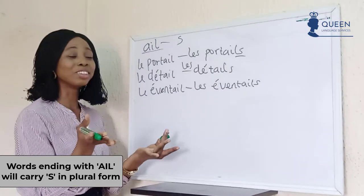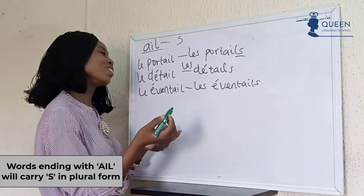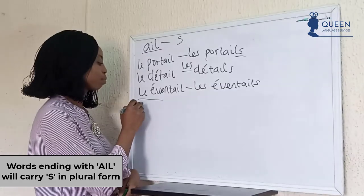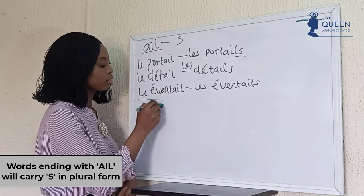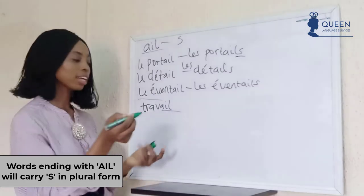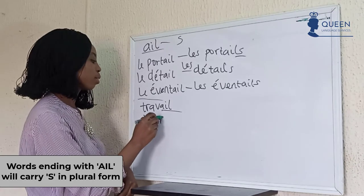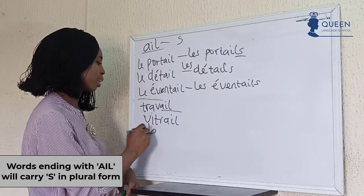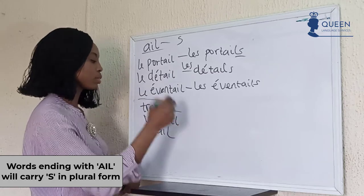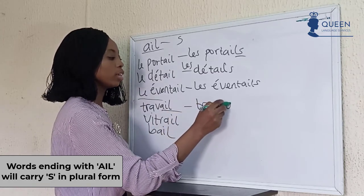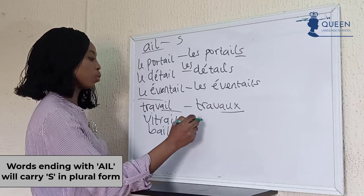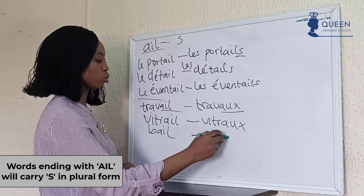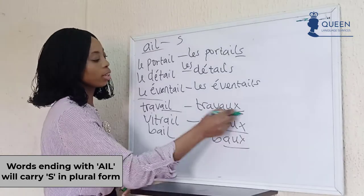We have some exceptions to the -ail rules as well. Examples are words like 'travail' — 'travail' has -ail ending and 'travaux' as the plural. We have 'vitrail' → 'vitraux.' So we have it to be 'travaux' in the plural form, and 'vitraux' as well.